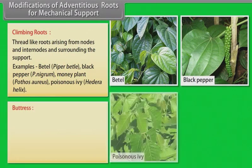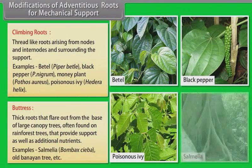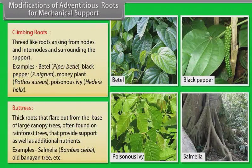Buttress roots: Thick roots that flare out from the base of large canopy trees, often found on rainforest trees, that provide support as well as additional nutrients. Examples: Salmalia, old banyan tree, etc.